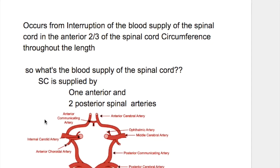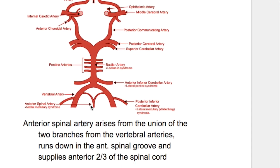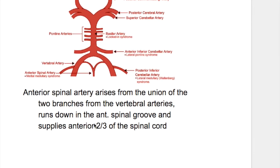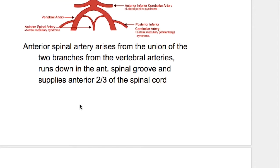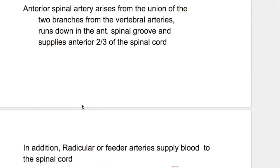The spinal cord is supplied by one anterior and two posterior spinal arteries. The anterior spinal artery arises from the union of two branches of the vertebral artery. The vertebral artery is the termination of the basilar artery. It runs down in the anterior spinal groove and supplies the anterior two-thirds of the spinal cord circumference.